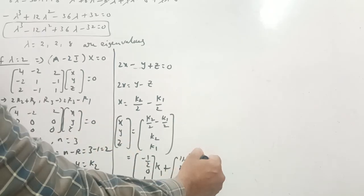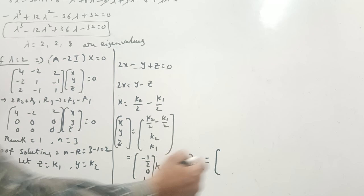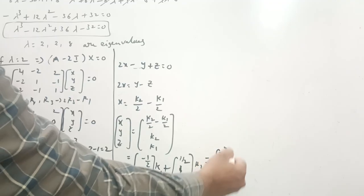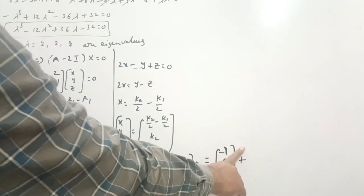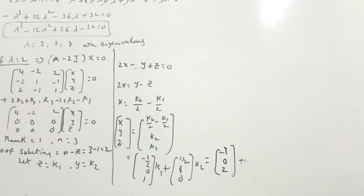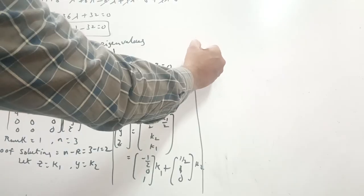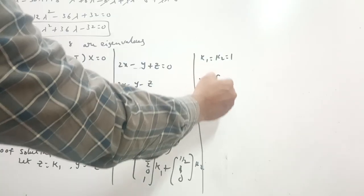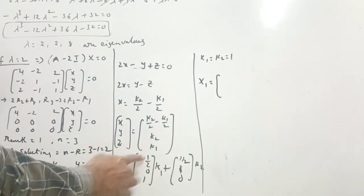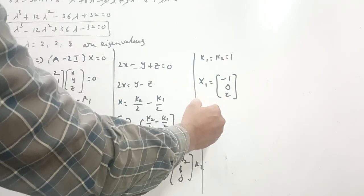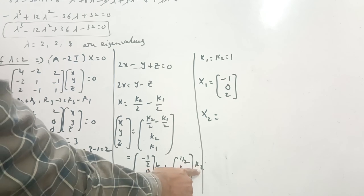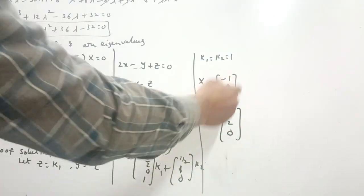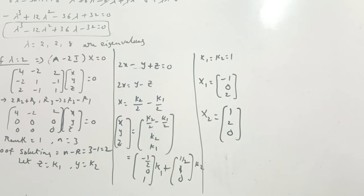Taking k1 = 1 and k2 = 0, and multiplying by 2, the first eigenvector X1 = [-1, 0, 2]. Taking k1 = 0 and k2 = 1, and multiplying by 2, the second eigenvector X2 = [1, 2, 0]. These two are the corresponding eigenvectors when lambda equals 2.